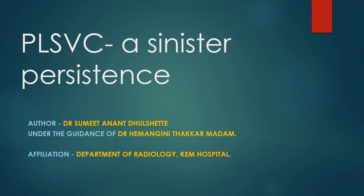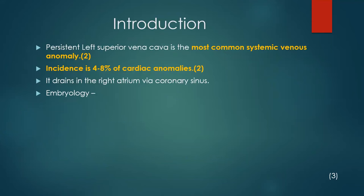Good morning everyone. I am here to talk about persistent left SVC, a sinister persistence. PLSVC is the most common systemic venous anomaly, which is associated with 4-8% of cardiac anomalies. It drains into the right atrium via the coronary sinus.